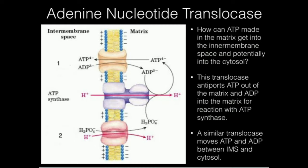The second problem is that once ATP is made in the matrix, the matrix is not the only place that uses ATP. There are some enzymes in the intermembrane space, and a lot of stuff in the cytosol — glycolysis has to burn some ATP, and countless other enzymes like kinases. How do I get this ATP out of the matrix? It would be useless if I made it and couldn't get it out.